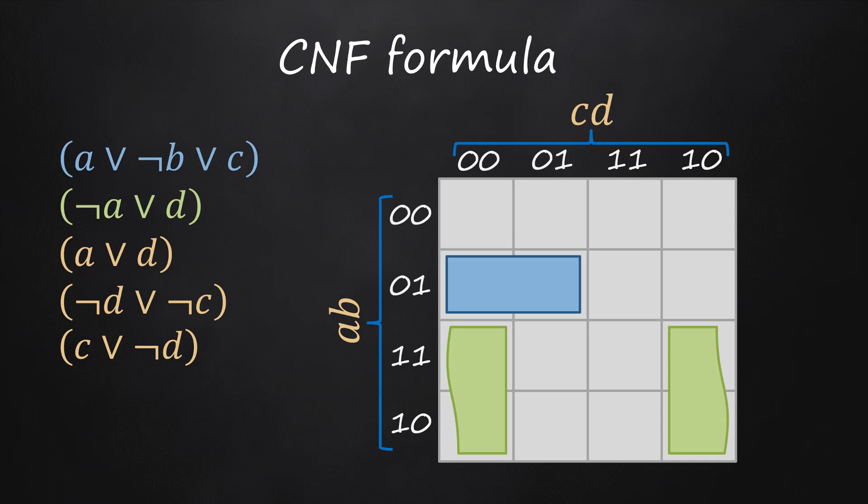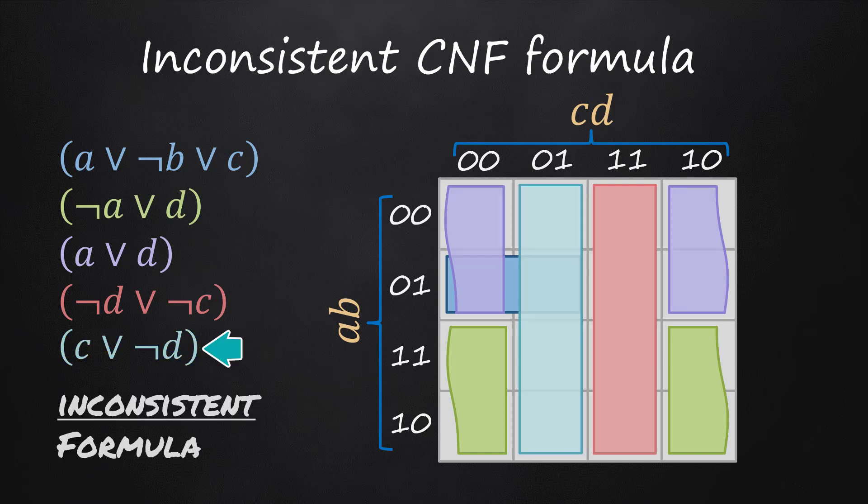Please imagine that the right and left edges of the grid are connected. The third clause is falsified by the mallow slab. The fourth clause is falsified by the pink slab. And the fifth clause is falsified by the cyan slab.